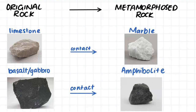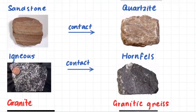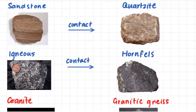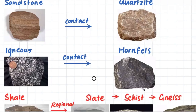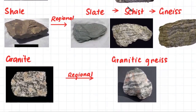If we apply contact metamorphism — just heat — to limestone, we will end up with marble. If we apply contact metamorphism to basalt or gabbro, we will end up with amphibolite. If we apply contact metamorphism to sandstone, we will end up with quartzite. And if we apply contact metamorphism to igneous rock, normally more mafic igneous rock, we will end up with a hornfels metamorphic rock.